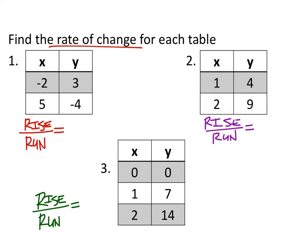On this first table, number one, from three to negative four — that's our rise, because it's a change in y's. Going from three to negative four is down seven, which makes the rise a negative seven, because it went in the downward direction. For the x's, this goes from negative two to five, that's going to go to the right, and counting that would be seven. So that's negative seven over seven, which is negative one.